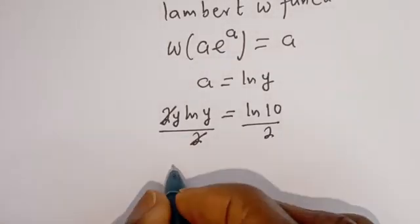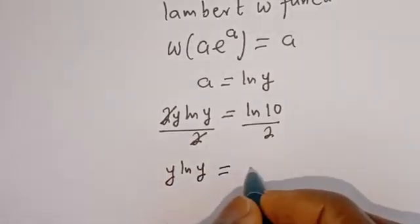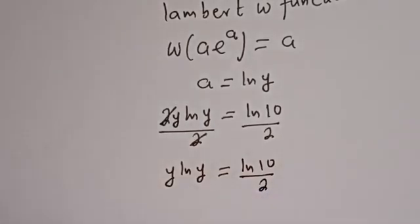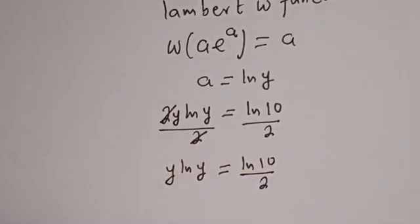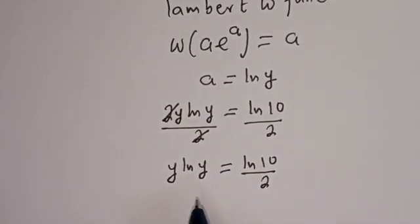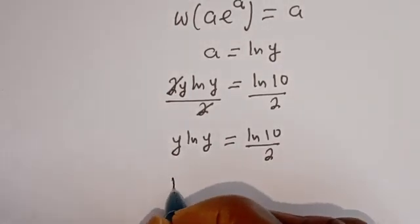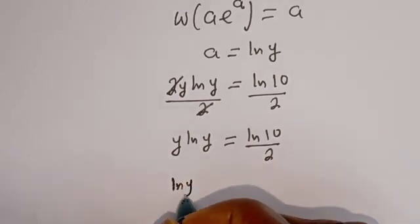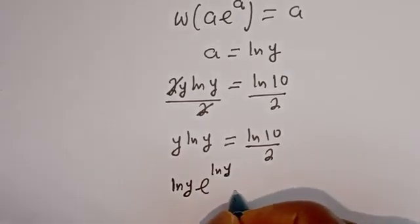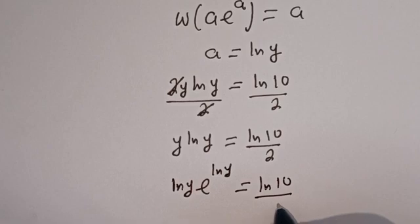Then we have y times ln of y is equal to ln of 10 over 2. Since ln of y equals a from our Lambert W function, this becomes ln of y times e to the power of ln of y is equal to ln of 10 over 2.